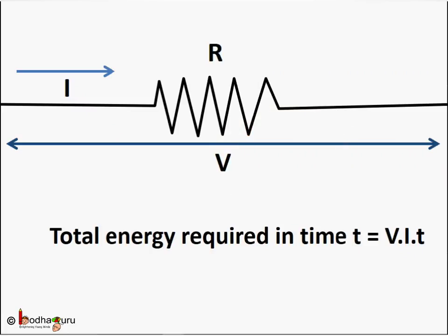Why resistance causes heat, let us learn. Consider a current I flowing through a resistor of resistance R. Say this is the tungsten wire of the electric bulb. Let's say the potential difference across it is V.